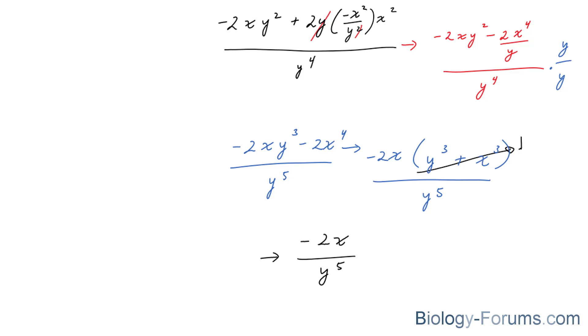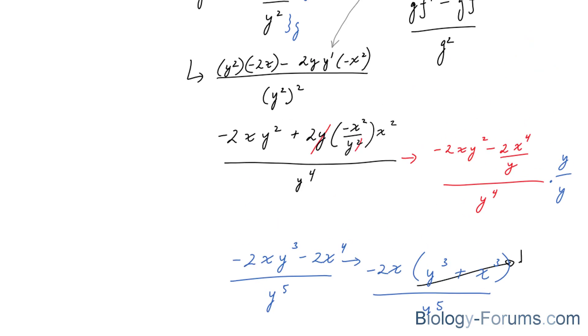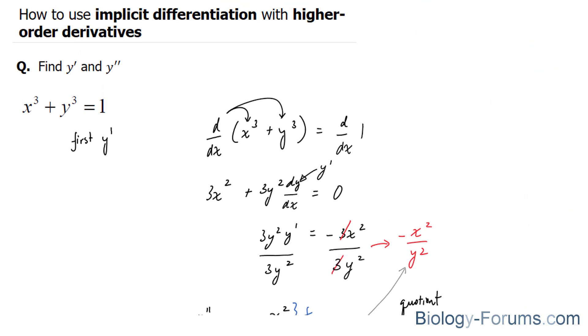So there you have it. That is how to use implicit differentiation when it comes to finding the higher derivatives or the second derivative. If you found this tutorial helpful, please support our channel by subscribing or by liking this video. If you have any further questions, you may visit our website at biology-forums.com. We are an online service for students seeking free homework help. See you soon.